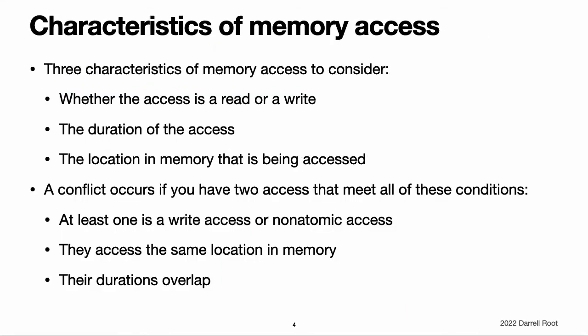Characteristics of Memory Access. There are three characteristics of memory access to consider in the context of conflicting access: whether the access is a read or write, the duration of the access, and the location in memory being accessed. Specifically, a conflict occurs if you have two accesses that meet all of the following conditions: at least one is a write access or a non-atomic access, they access the same location in memory, and their durations overlap.